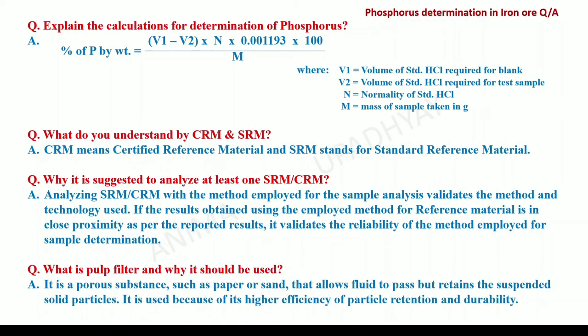Explain the calculations for the determination of phosphorus. The calculation is expressed as percentage of phosphorus by weight. We take the difference of the blank and sample readings, that is (V1 − V2), which is multiplied by the normality of the standard hydrochloric acid and the factor 0.001193, then divided by the mass of the sample in grams, and multiplied by 100 to get the result in percentage.